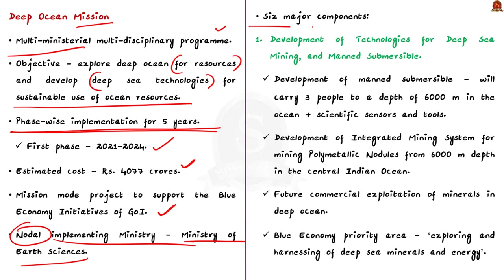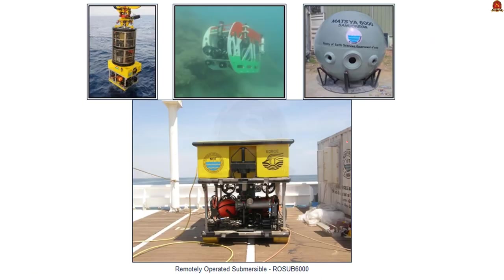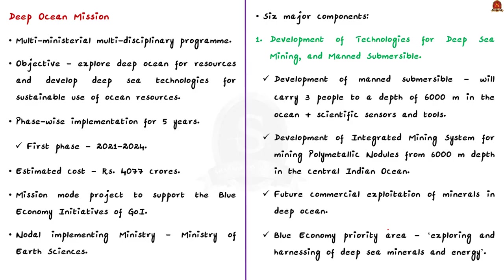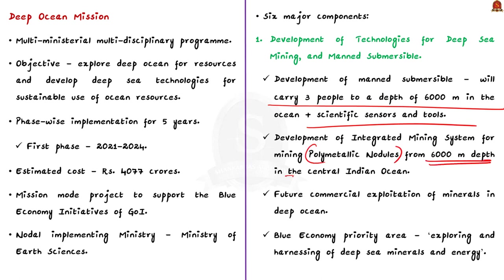This mission consists of six major components. The first component is development of technologies for deep sea mining and manned submersible. Under this component, a manned submersible will be developed — a submersible boat or craft designed for research and exploration. This proposed manned submersible will carry three people to a depth of 6000 meters in the ocean and will also carry scientific sensors and tools. Along with this, an integrated mining system will also be developed for mining polymetallic nodules from 6000 meter depth in the central Indian Ocean.